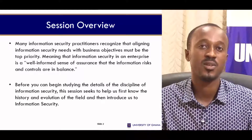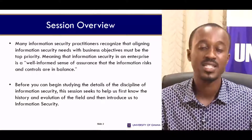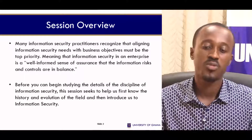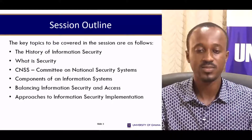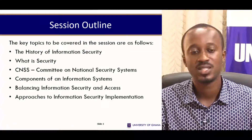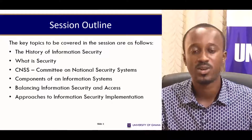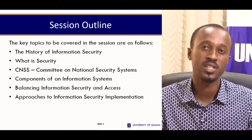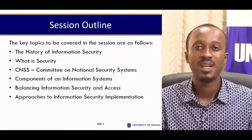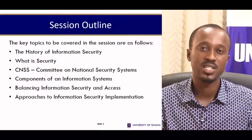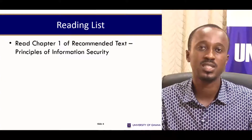We'll also look at the meaning of information security in an enterprise and the definitions concerning what information security is all about with regards to a business. Before studying the details, we'll look at certain concepts covering the history and evolution of the field. The session outline covers: the history of information security, what security itself is, the Committee on National Security Systems, components of an information system, balancing information security and assets, and approaches to implementation. The recommended text is chapter one of Principles of Information Security.